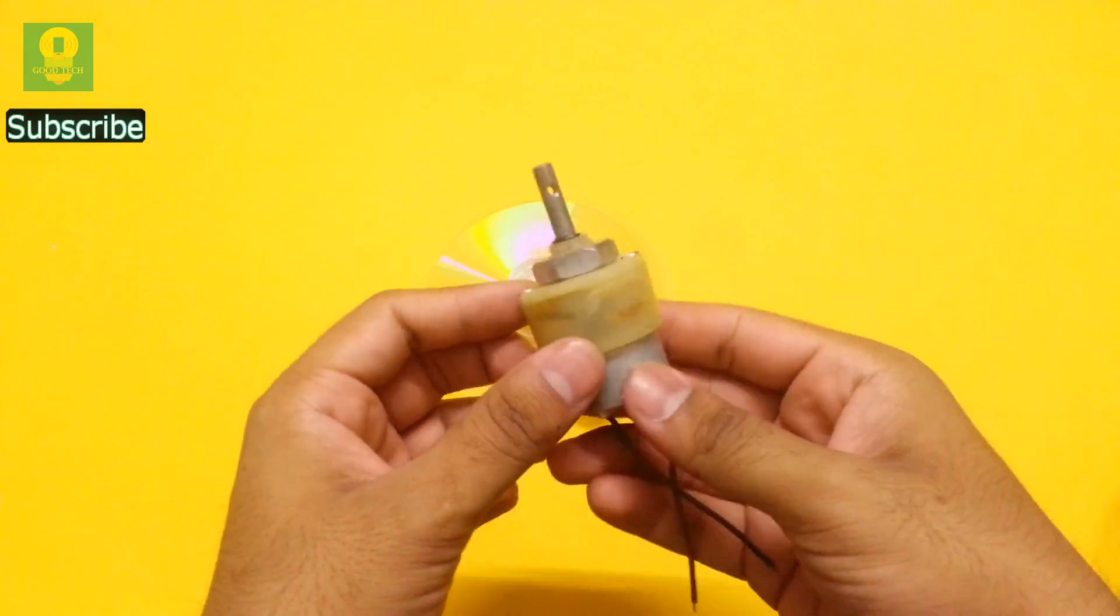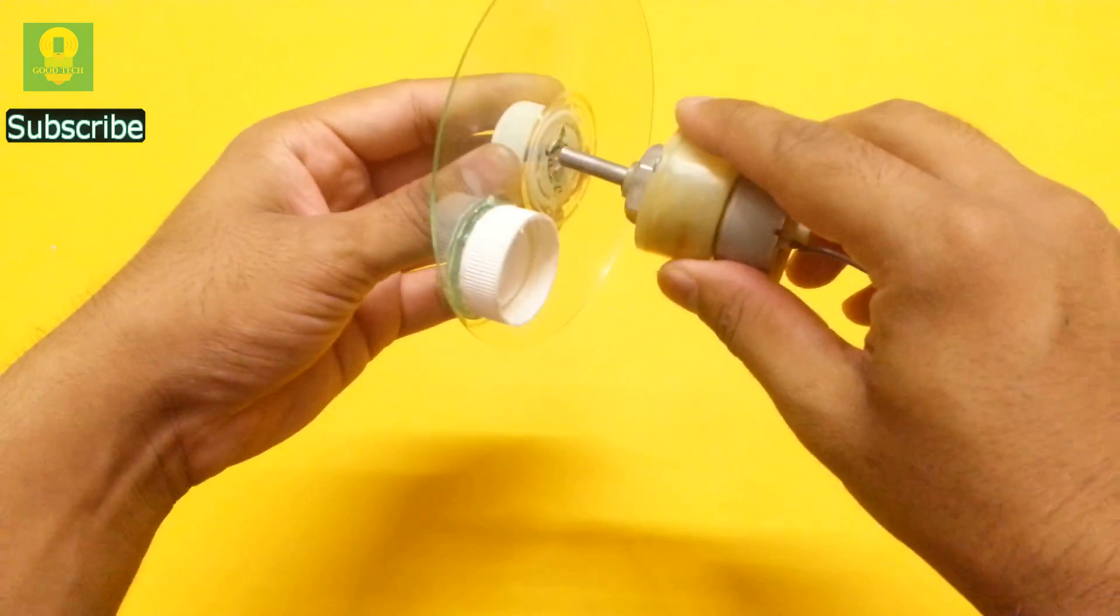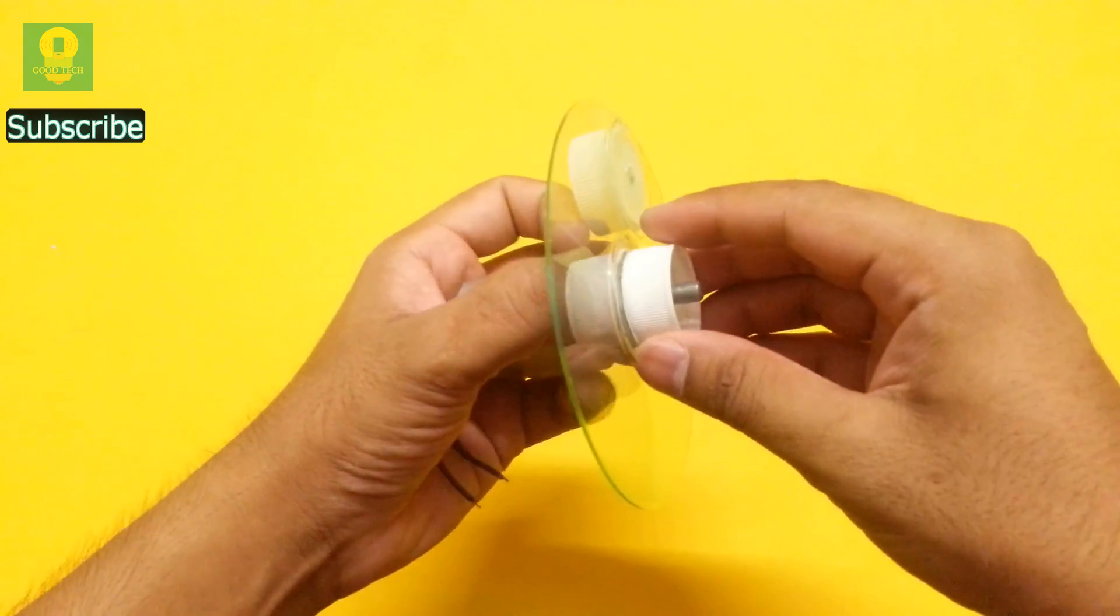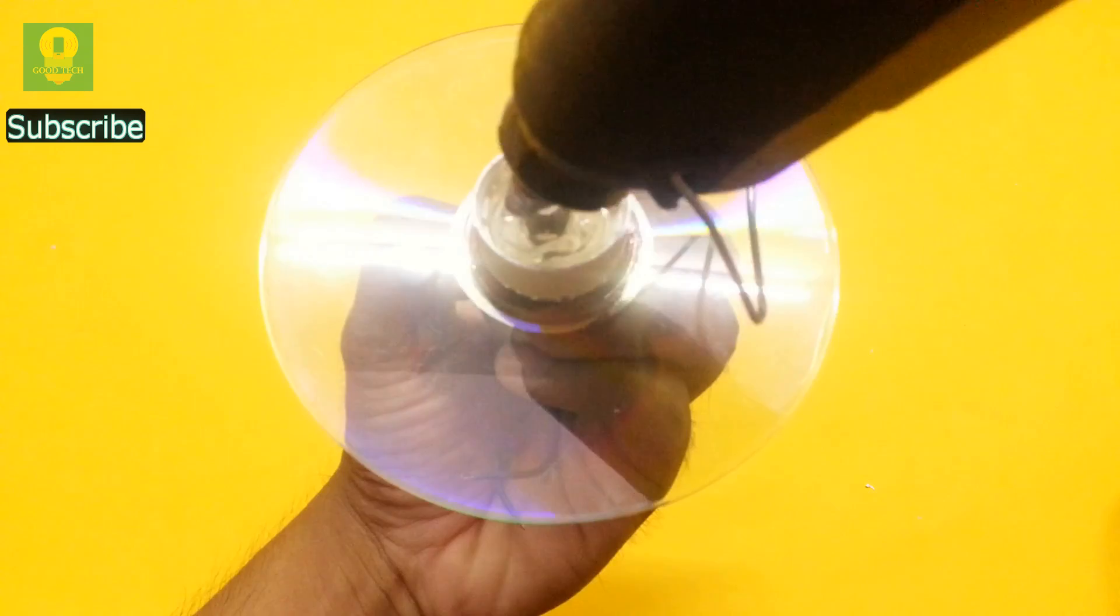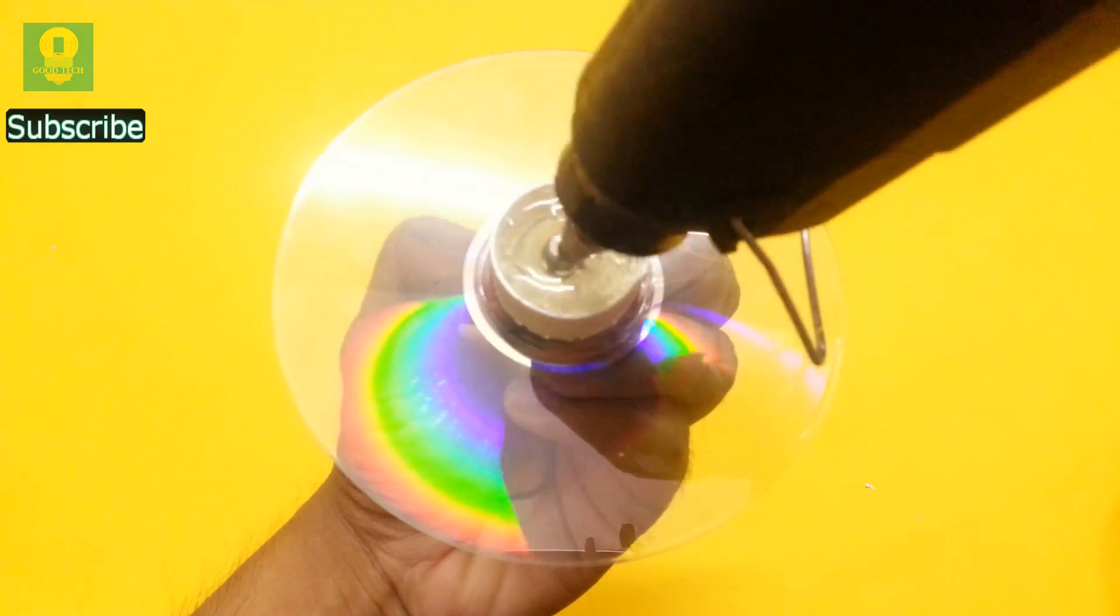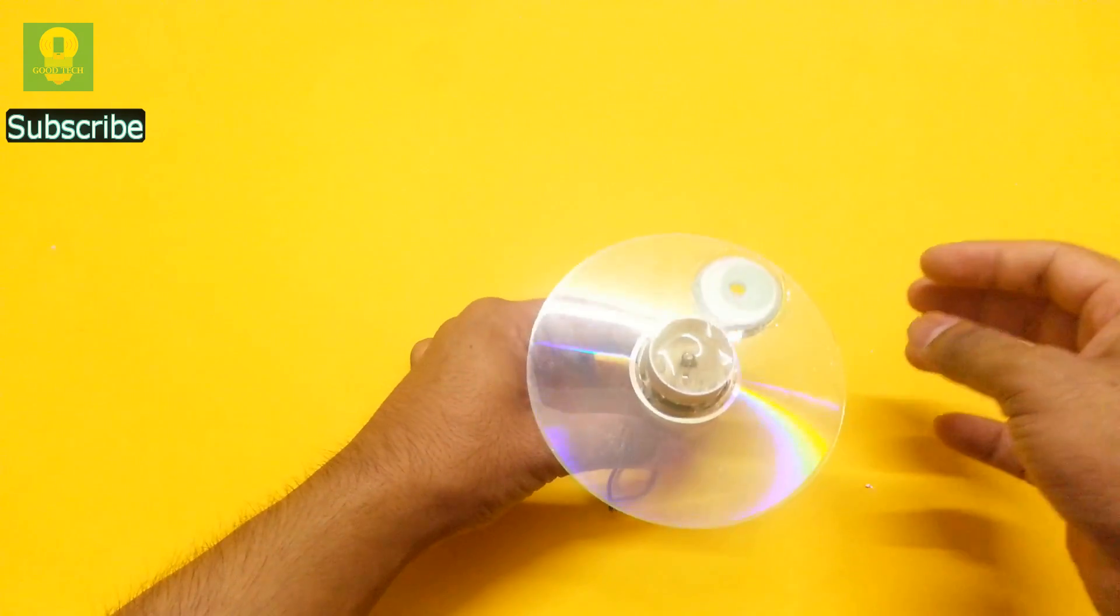Take a 12 volt geared DC motor. Fix the CD in the motor shaft and fill hot glue in the bottle cap. Let it dry for some time.